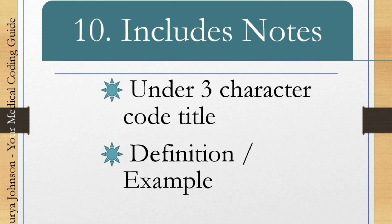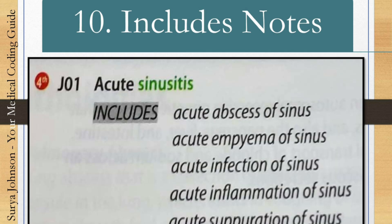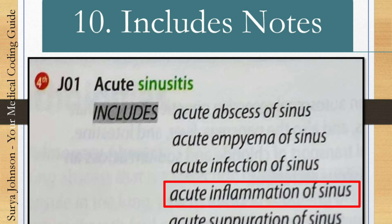Convention 10 is includes notes. These notes come under a three-character code title and can give an example or definition of that code. For example, under acute sinusitis J01, there is an includes note providing definitions — acute sinusitis can include acute abscess of sinus, acute empyema of sinus, acute infection of sinus. Some doctors might write 'acute inflammation of the sinus' or 'acute abscess of the sinus,' and this note clarifies that these also mean acute sinusitis, helping you choose the correct code.